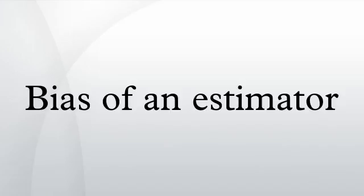In statistics, the bias of an estimator is the difference between this estimator's expected value and the true value of the parameter being estimated. An estimator or decision rule with zero bias is called unbiased. Otherwise the estimator is said to be biased.